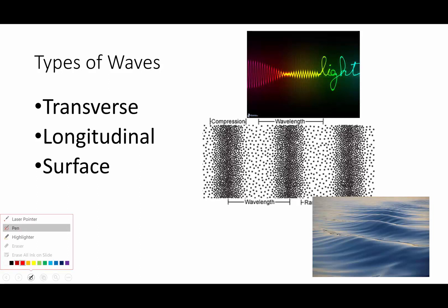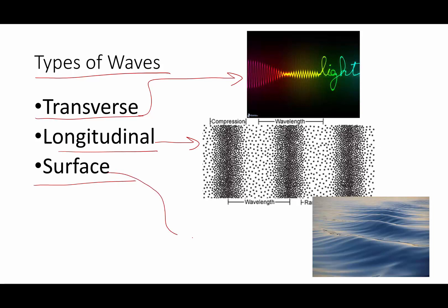Hi everyone, Mary here, and this time we're going to talk about different types of waves. There are three kinds: transverse, longitudinal, and surface. Transverse waves are waves that are like light waves, longitudinal waves are like sound waves, and surface waves occur at the boundary between different media, and the surface of water is a surface wave.